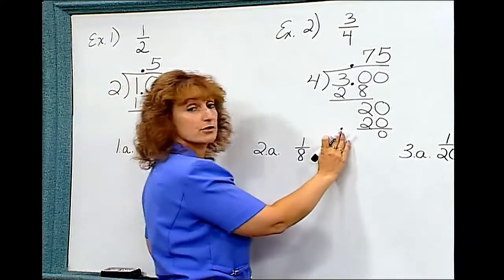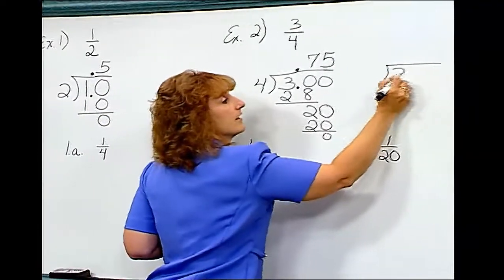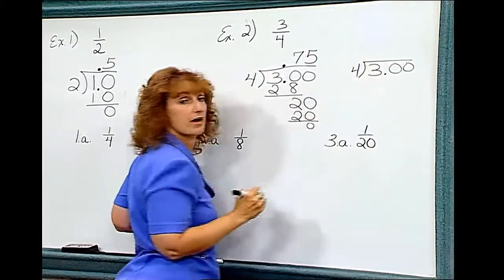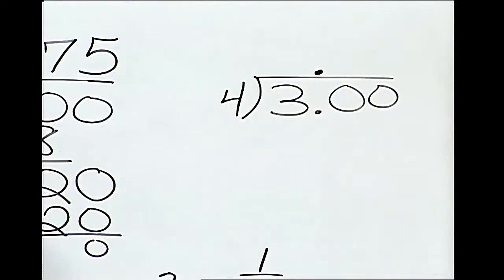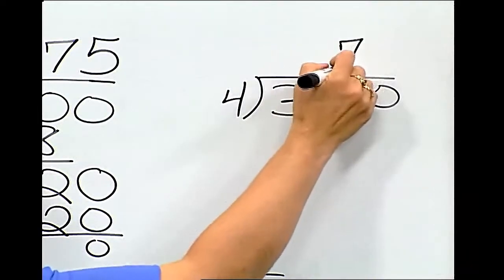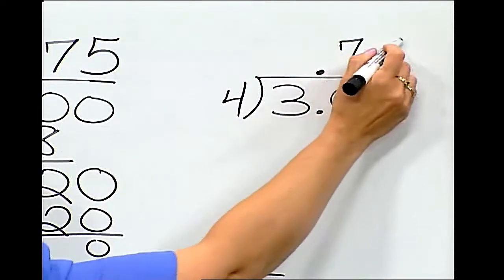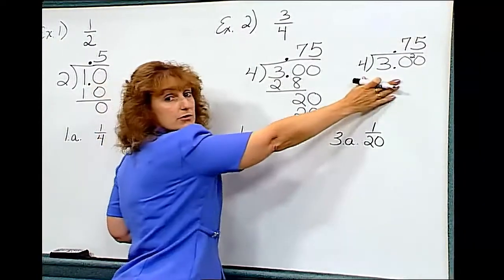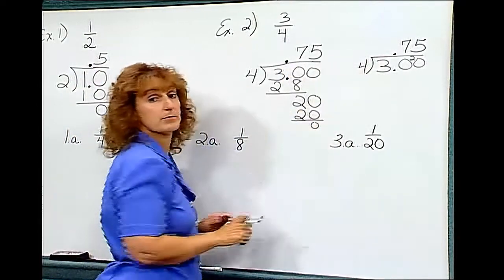If you want to use your shortcut for long division, if you have your 3.00 and you're dividing by 4, remember to bring that decimal point straight up. 4 goes into 30 7 times with 2 left over. 4 goes into 25. Either way, if you show your long division or do short division, 3/4 is equivalent to 0.75.